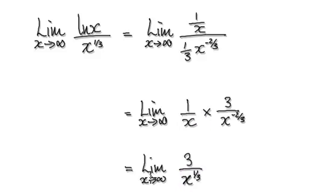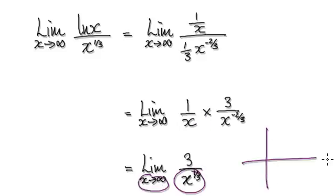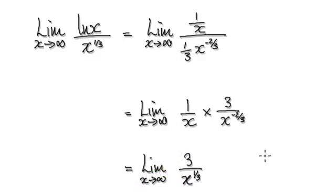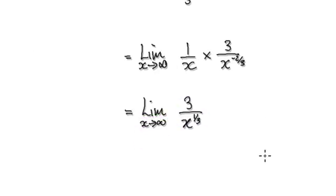So remember, as x tends to infinity, remember that this thing here grows — it keeps on growing and growing and growing, it heads towards infinity. So you've got a constant over infinity. So the limit is 0.